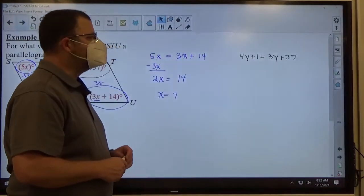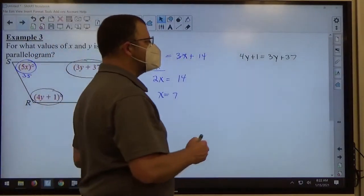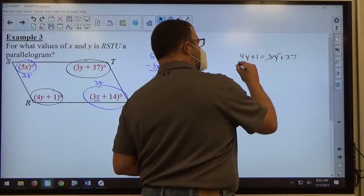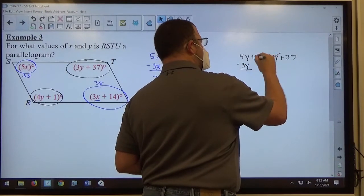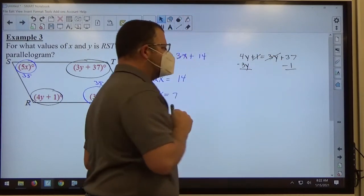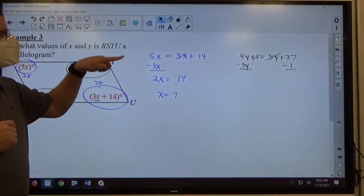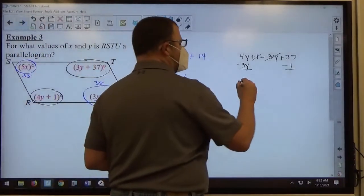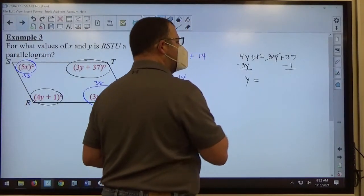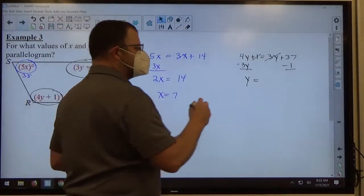The other equation, 4y plus 1 equals 3y plus 37. Move the 3y to the left, move the 1 to the right, in both cases the signs change when we move. 4y minus 3y makes 1y, better known as y, and 37 minus 1 makes 36.